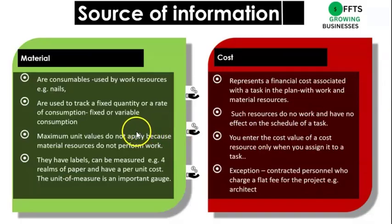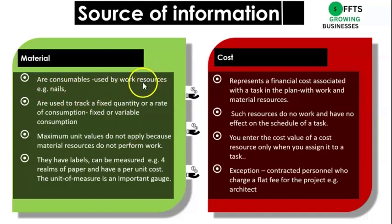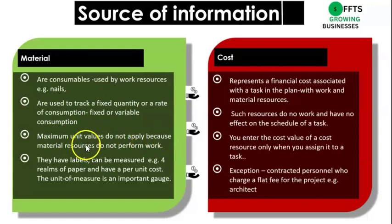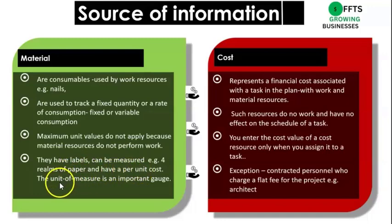Material resources are consumables — nails, lumber, galvanized. They are used by work resources and are used to track a fixed quantity or rate of consumption. Maximum units do not apply because material resources do not perform work. But they have labels and can be measured. If you have paper, you have to say how is it named and give a unit cost. The unit cost is an important measure because if four reams are consumed, it will be four times the unit cost of one ream.